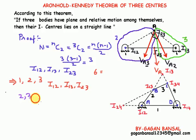In the same way, if we are considering links two, three, and four in relative motion among themselves, the combination of these three links will have three different i-centers: i-23, i-34, and i-24, which also lie on a straight line.